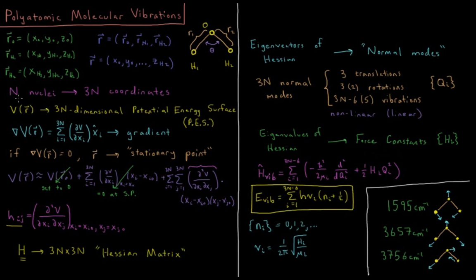So in general, if we have N nuclei, we'll have 3N coordinates, as each of them has an X, Y, and Z position. So our potential energy function that we have to specify for our Hamiltonian, V of R of all 3N coordinates, will be a 3N dimensional potential energy surface. So at every single value of every single one of these coordinates, we have to know what is the potential energy.